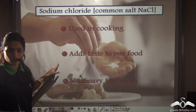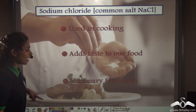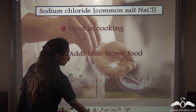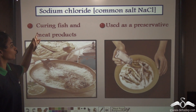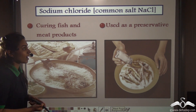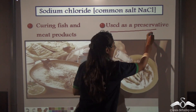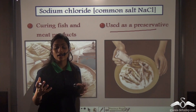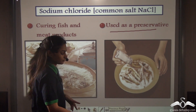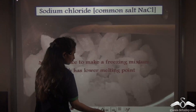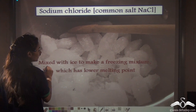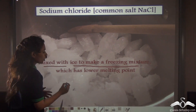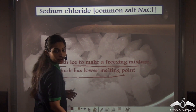Common salt is used in cooking, adds taste to our food, and it is also necessary for our health. It is used for curing fish and meat products and also used as a preservative. That is why pickles contain a large amount of salt, and it is mixed with ice to make a freezing mixture which has a lower melting point than ice.